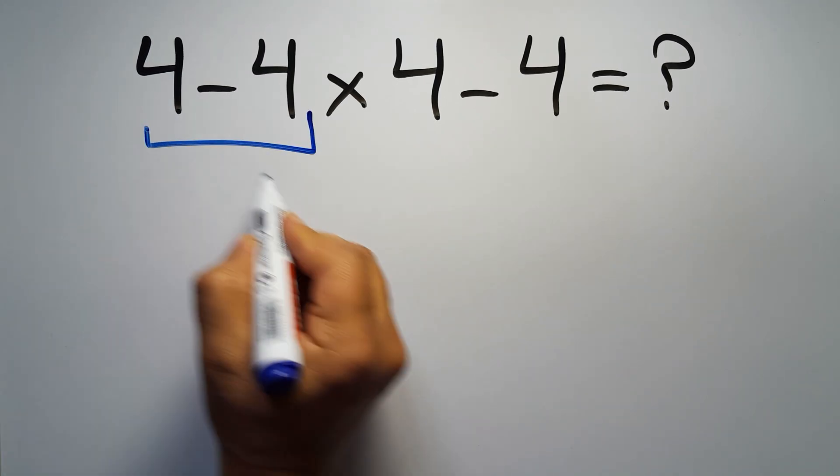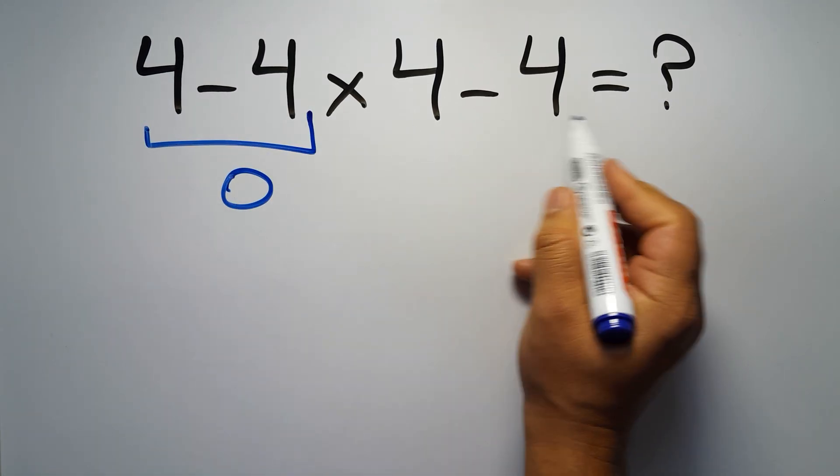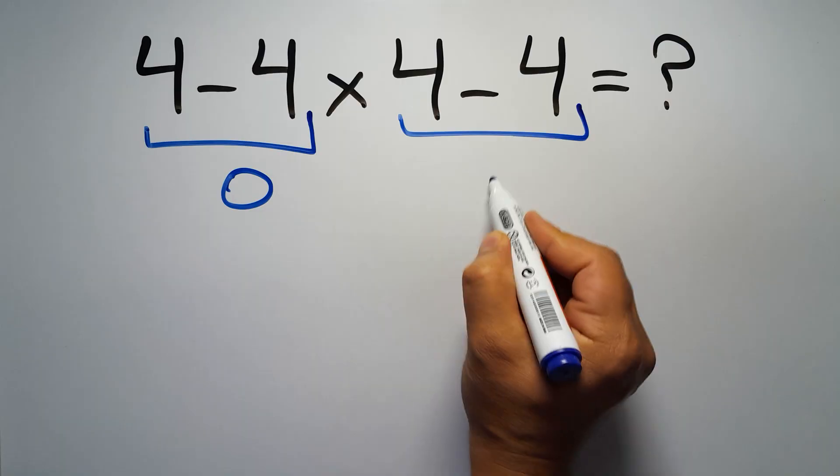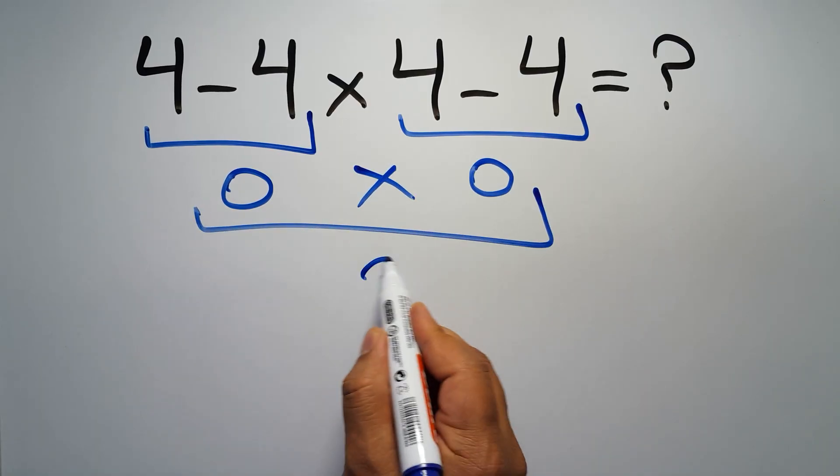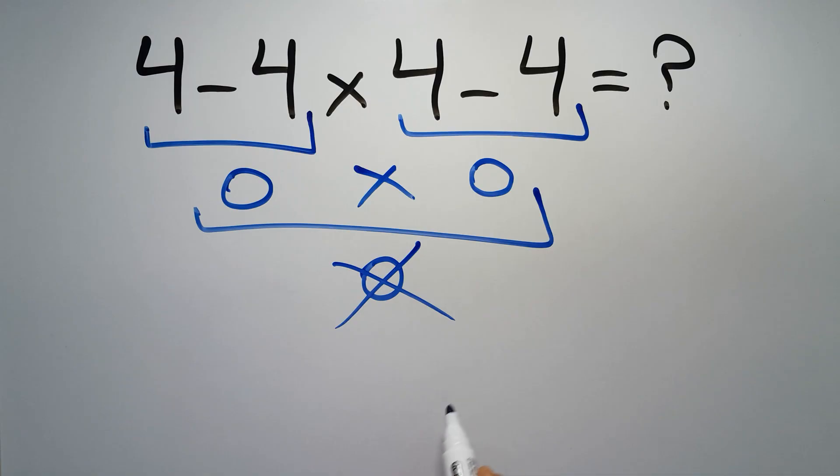4 minus 4 gives us 0, and again here we have 4 minus 4, so 0 times 0 which gives us 0, but this answer is not correct.